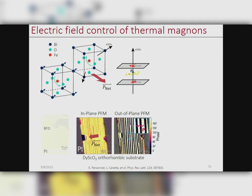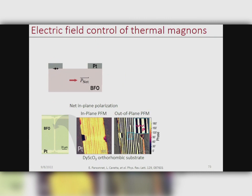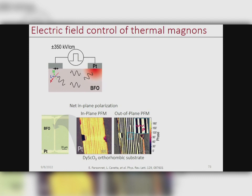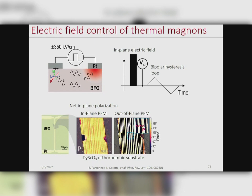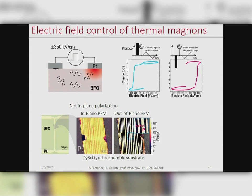We perform experiments where we apply a voltage and measure the non-local response. We're mainly looking at magnons generated by the spin Seebeck effect. We apply an electric field, measure the non-local voltage, and use techniques to double-check that the measurement itself did not change the magnetic state.